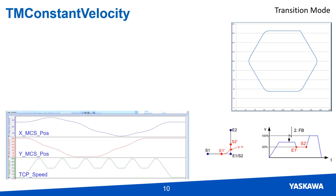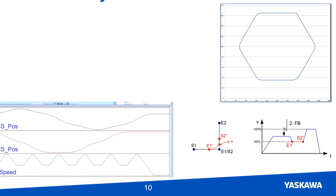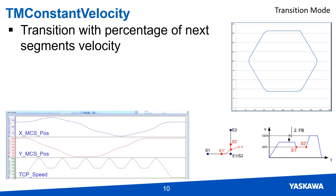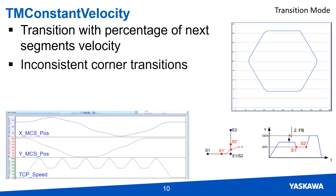The TM Constant Velocity transition mode is similar to TM Start Velocity, but instead of slowing down to a percentage of the start velocity, it slows down to a percentage of the next segment's velocity. Depending on whether the next segment's velocity is slower or faster, the corner position may vary. This potentially could round the transition corners a lot, but again, for a pick and place application, this is fine.